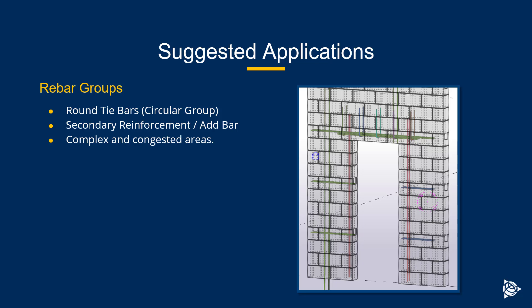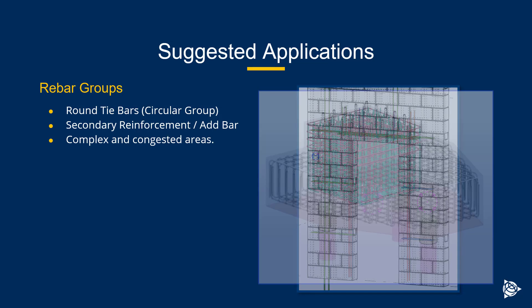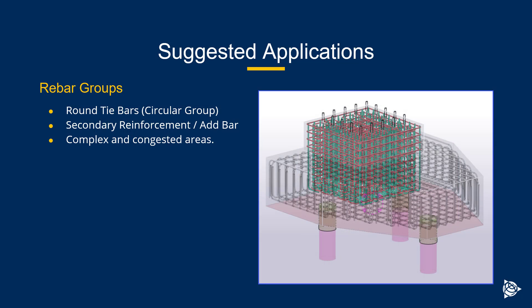One place I've used groups heavily is in complex and congested areas. For example, inside large base mats where you have nested cages or cages inside of cages underneath where equipment goes. Rebar groups can really help you get that configuration of bar in, especially if it's not necessarily contouring or dictated by the surface geometry or the skin of the concrete.